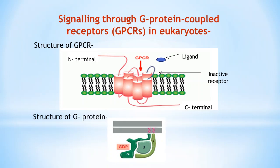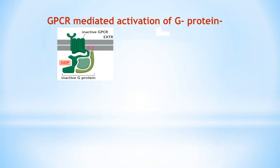The G protein is composed of three protein subunits: alpha, beta, and gamma. The alpha and gamma subunits remain attached to the lipid bilayer, while the beta subunit is attached to the gamma subunit. In the unstimulated condition, the alpha, beta, and gamma subunits remain together while GDP (guanosine diphosphate) remains bound to the alpha subunit. As a result, the G protein remains inactive as a single complex.